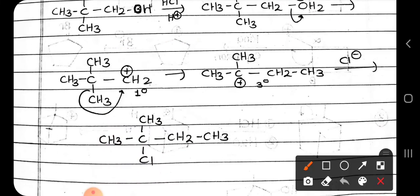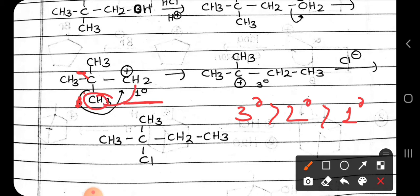The carbocation formed is a primary carbocation. We know that tertiary carbocations are more stable than secondary, which are more stable than primary. So in this molecule, there is a chance of forming a tertiary carbocation by migrating a group towards this primary carbocation. If we label this as alpha and this as beta, breaking the alpha-beta bond causes the group to migrate towards the carbocation, forming a tertiary carbocation, which is highly stable because it has three CH₃ groups attached. This migration is known as rearrangement.